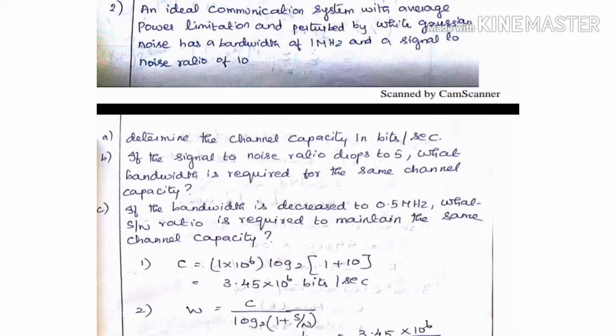If the bandwidth is decreased to 0.5 MHz, what S by N ratio is required to maintain the same channel capacity?